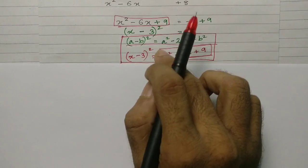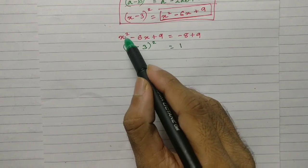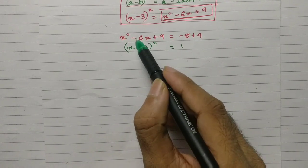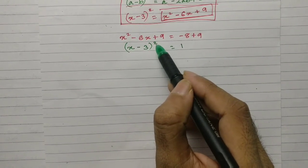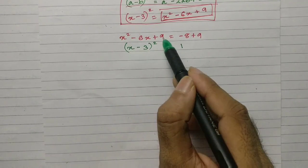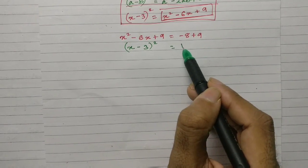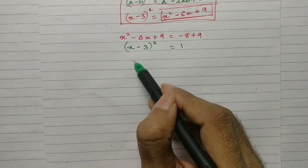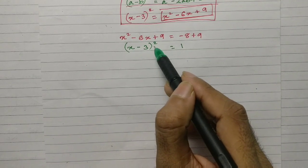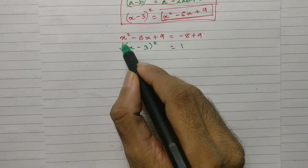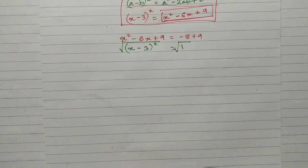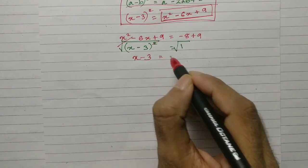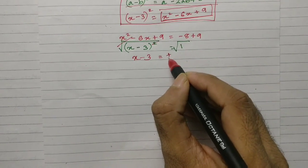Coming back, I will rewrite the equation. For the left side: x squared — write x once; 9 is written as 3 because 3 times 3 is 9; and the sign of the middle term is taken. This gives x minus 3 the whole square. On the right side, minus 8 plus 9 gives 1. So x minus 3 the whole square equals 1.